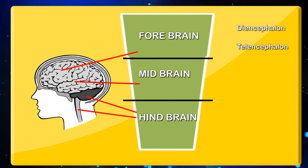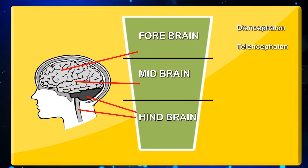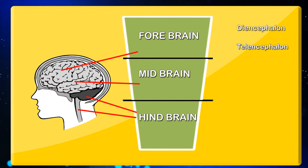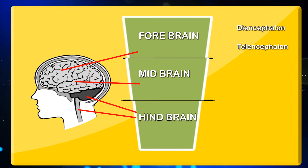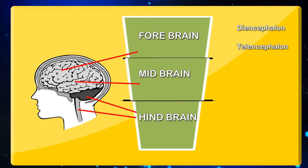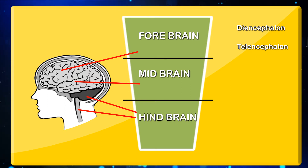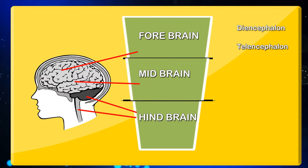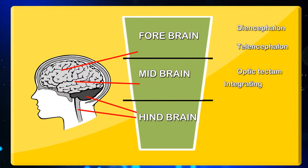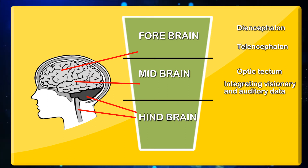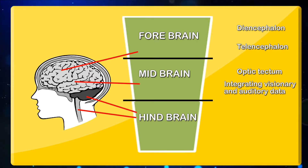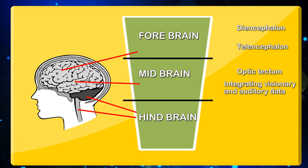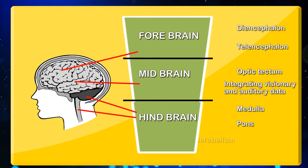The telencephalon contains the major part of the brain called the cerebrum. The midbrain is the part that mediates between the hindbrain and forebrain, acting as a bridge in transmitting signals between them. The top of the midbrain is known as the optic tectum, which integrates visual and auditory data. The hindbrain is the control center for visceral functions and has three sub-parts: medulla oblongata, pons, and cerebellum.